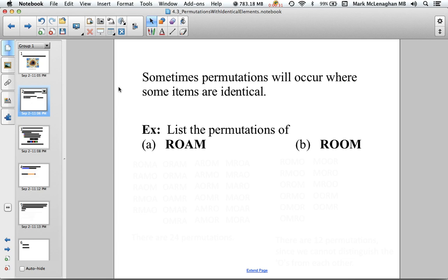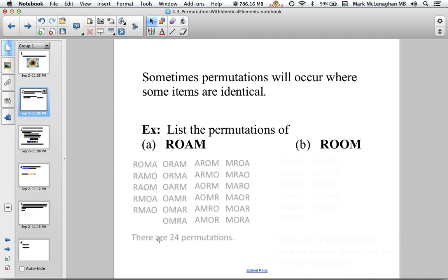Alright, so to get started, we'll look at comparing the permutations of two words, ROAM and ROOM. So, permutations of ROAM, you can see where they all are. 24 all together, you can count them if you want.